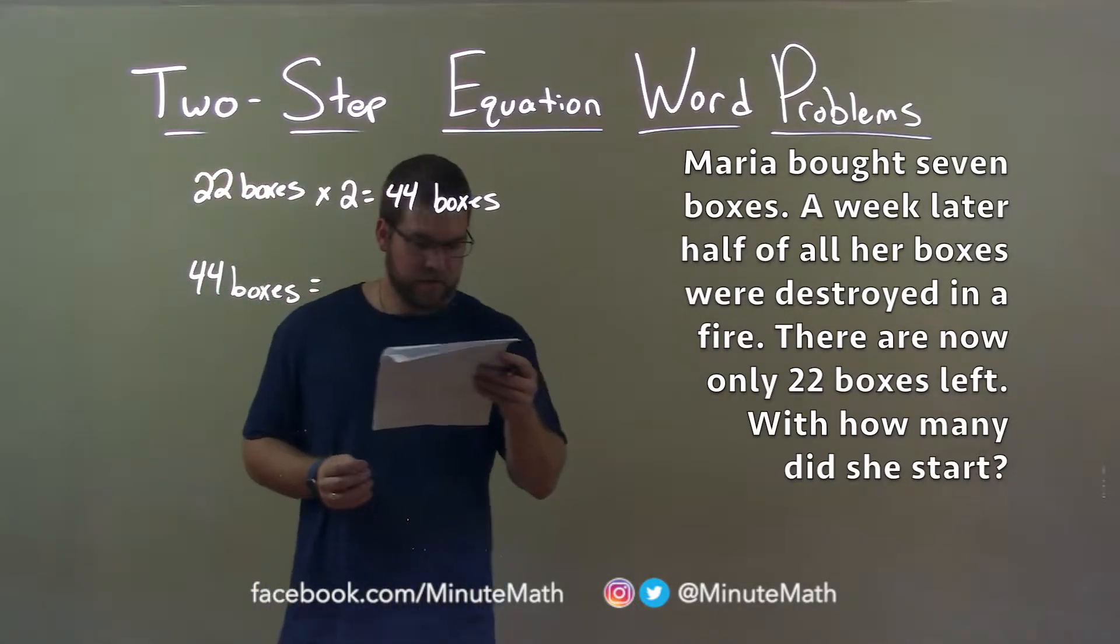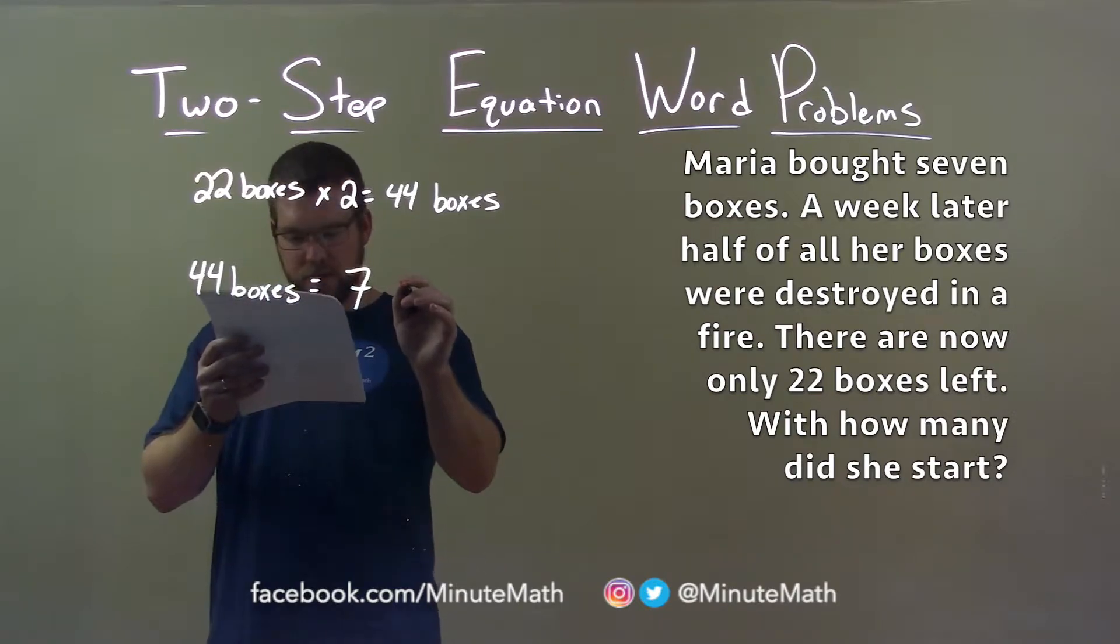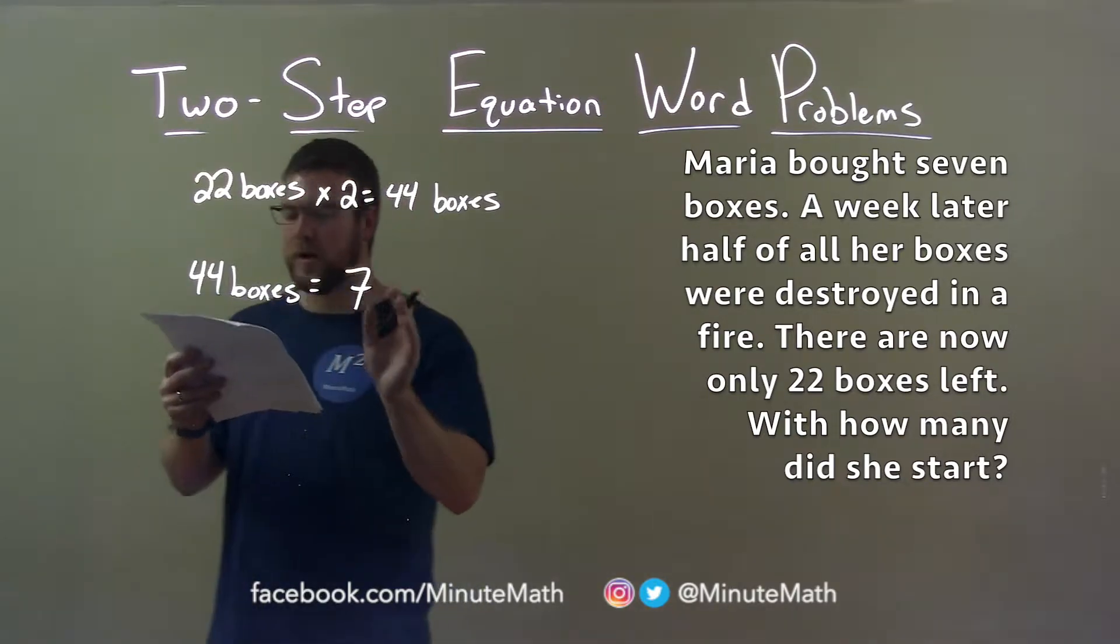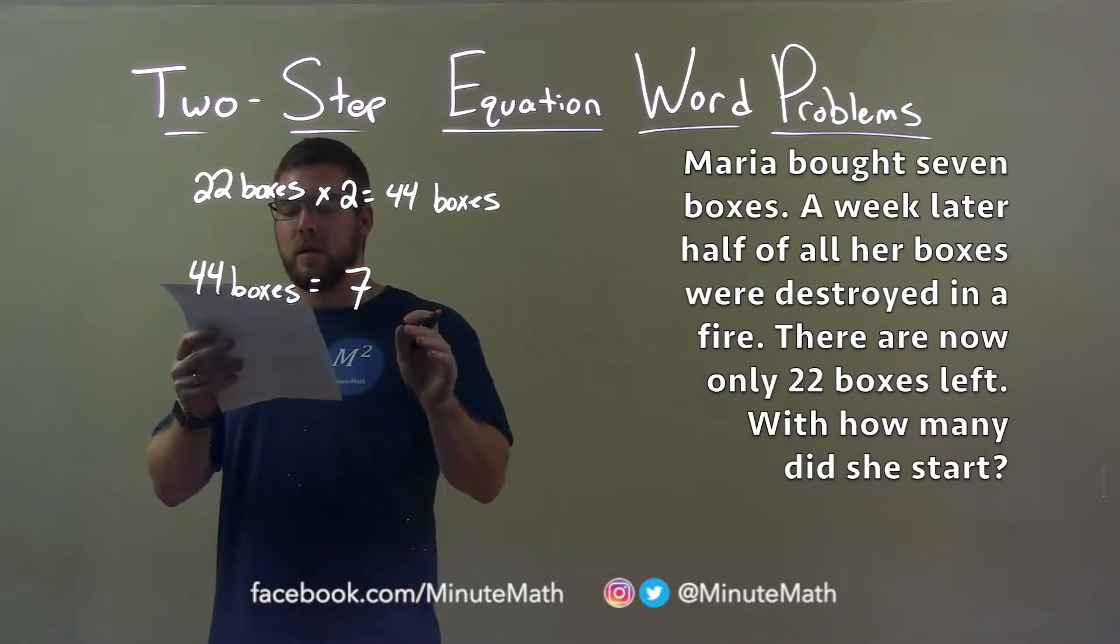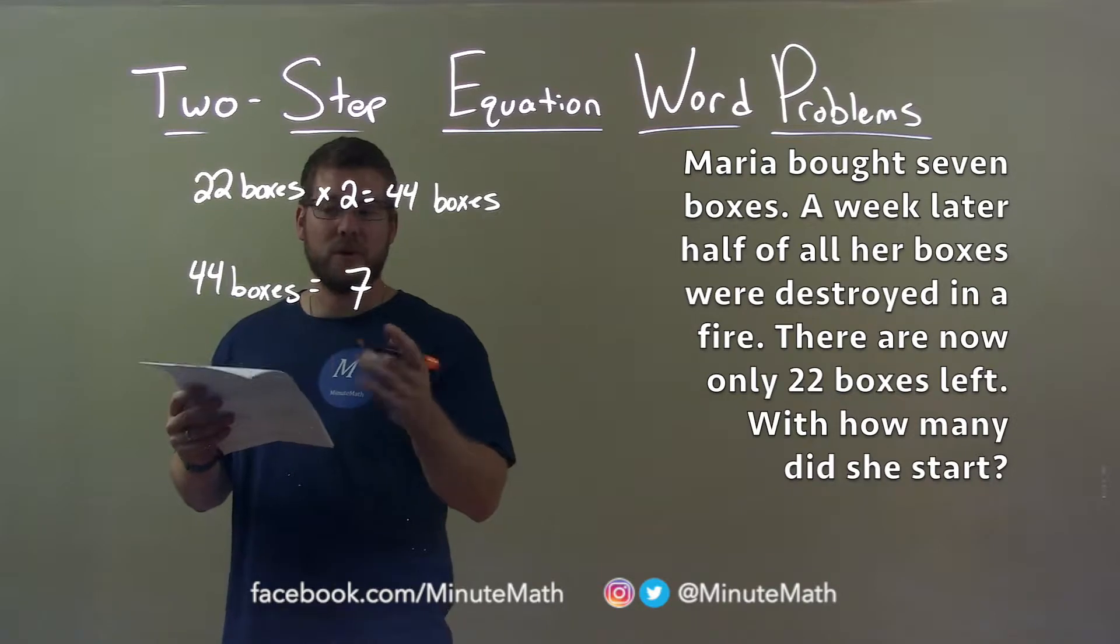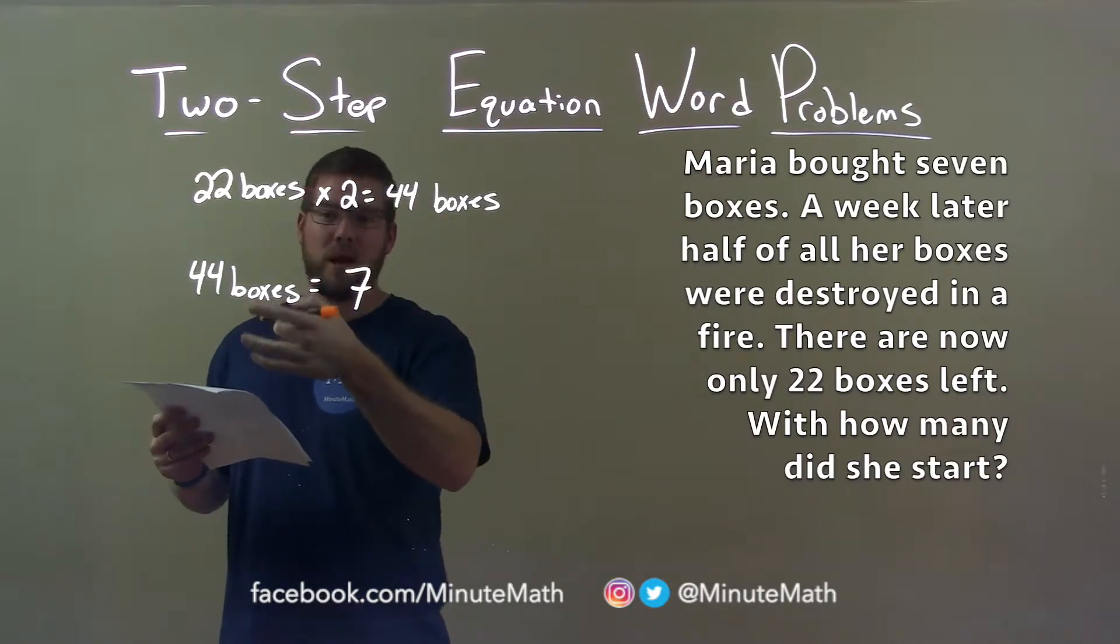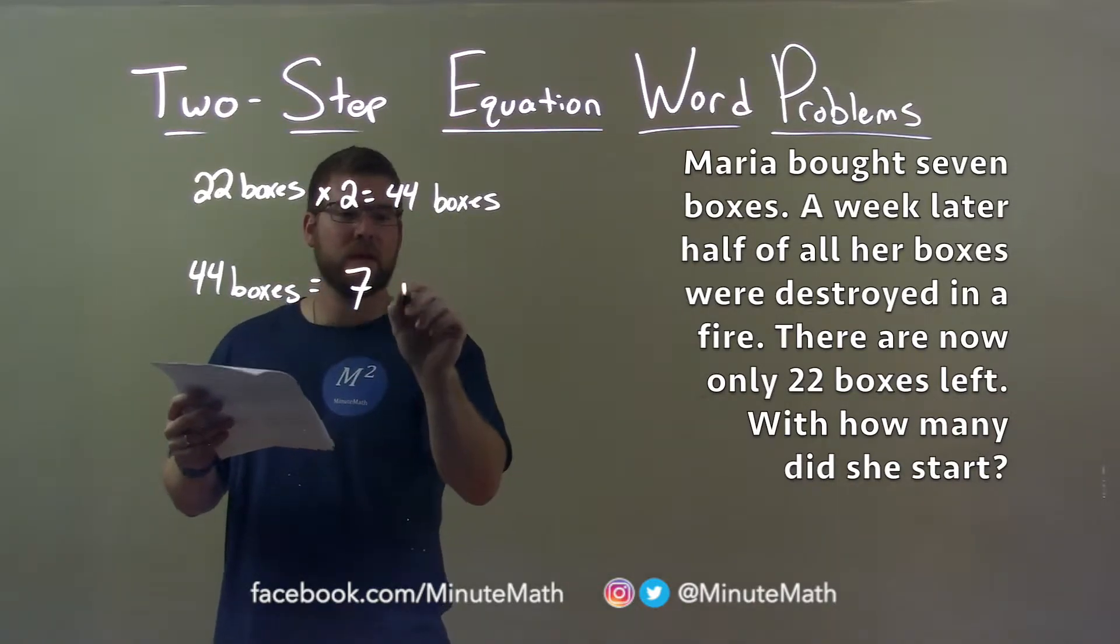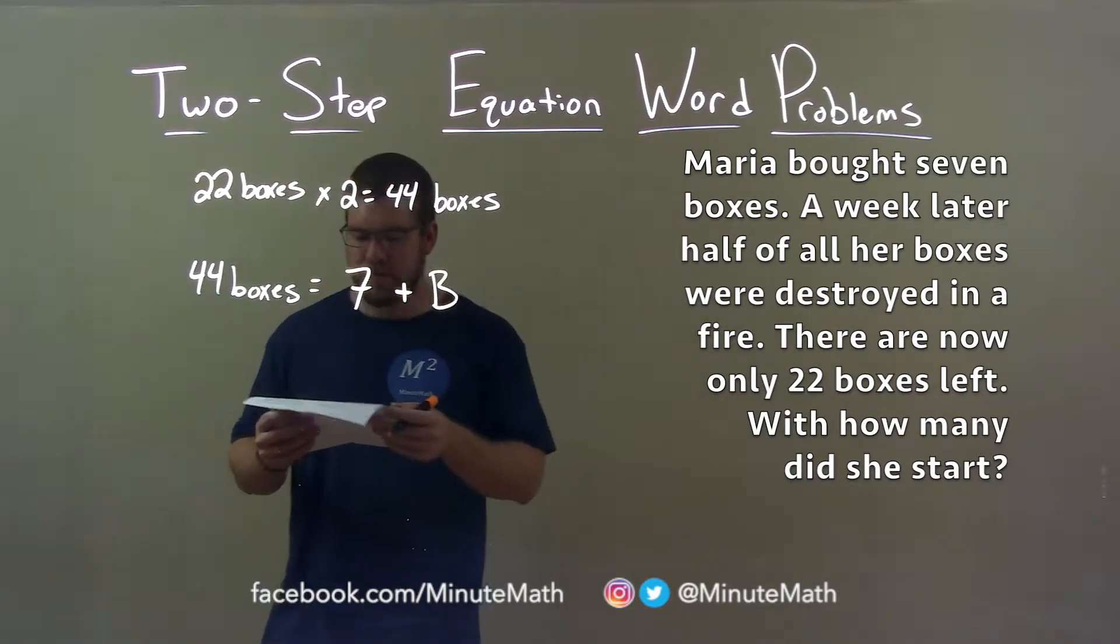Now, she bought seven boxes, and we had 44 boxes after the fire. That was after multiplying by two to get 44 boxes. We want to see how many boxes she had before she bought those seven.